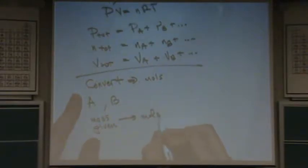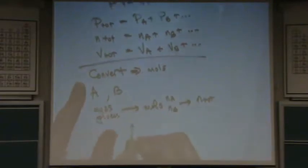Well, you go to moles. And then, so you have moles of A and you have moles of B. You add moles of A and moles of B to get total moles.